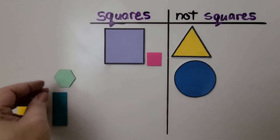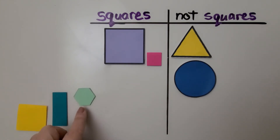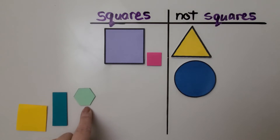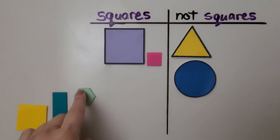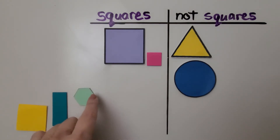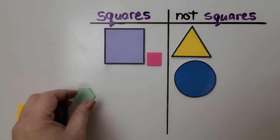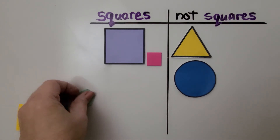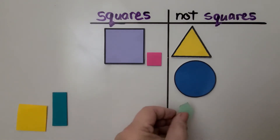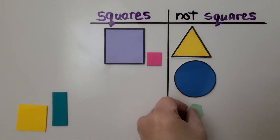What about this one? Is this a square? Does it have four corners? No, it's got one, two, three, four, five, six corners. That's a hexagon. That's not a square.